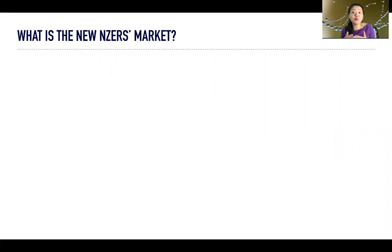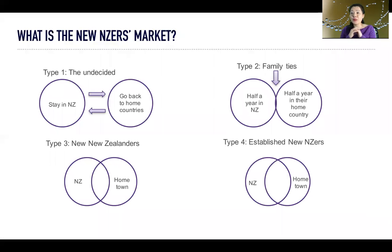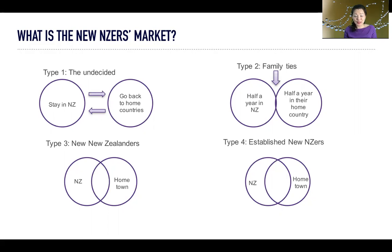I'm going to briefly use the New Zealand Asian market — what we call 'New New Zealanders' — as an example to show how many different categories there are. My analysis separates them into four categories. Type one is the undecided. For this category, they're unsure whether to stay in New Zealand or go back to their home countries. There are a group of Asian people like that in New Zealand — they are residents, but they are still undecided. Right now, there is some uncertainty in their life.